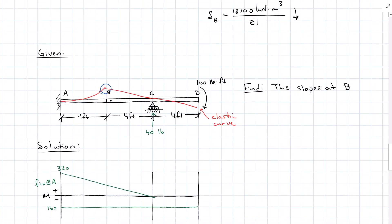I had the elastic curve coming down at the hinge, but there's no load to cause it to come down. So drawing a tangent line, theta B-left is acting counterclockwise, and theta B-right is acting clockwise at the hinge.